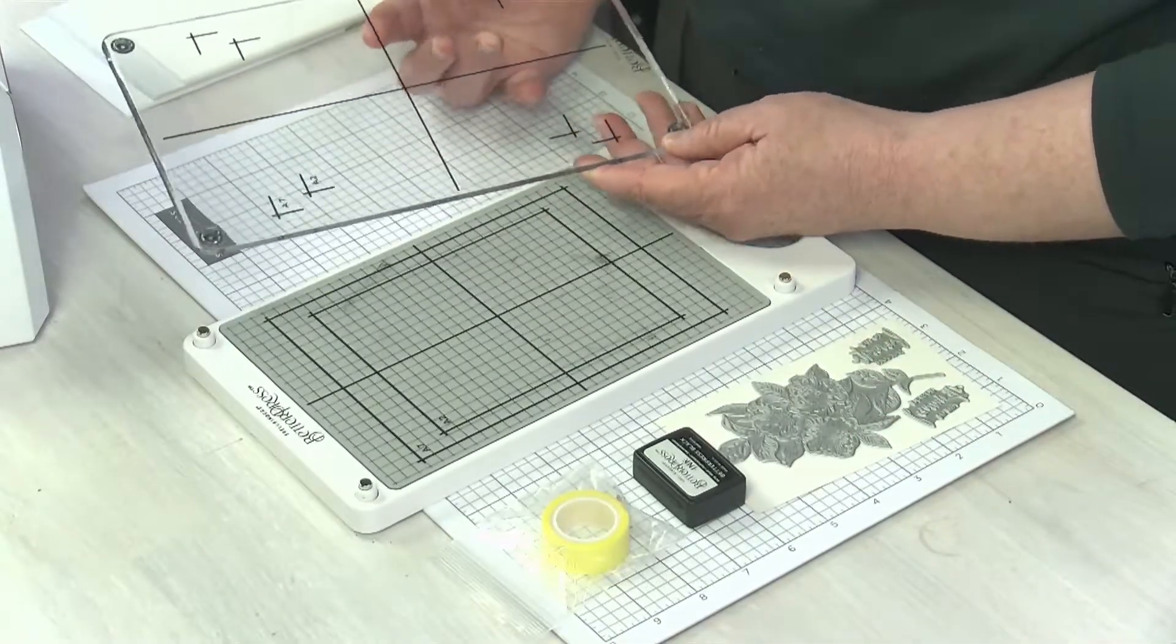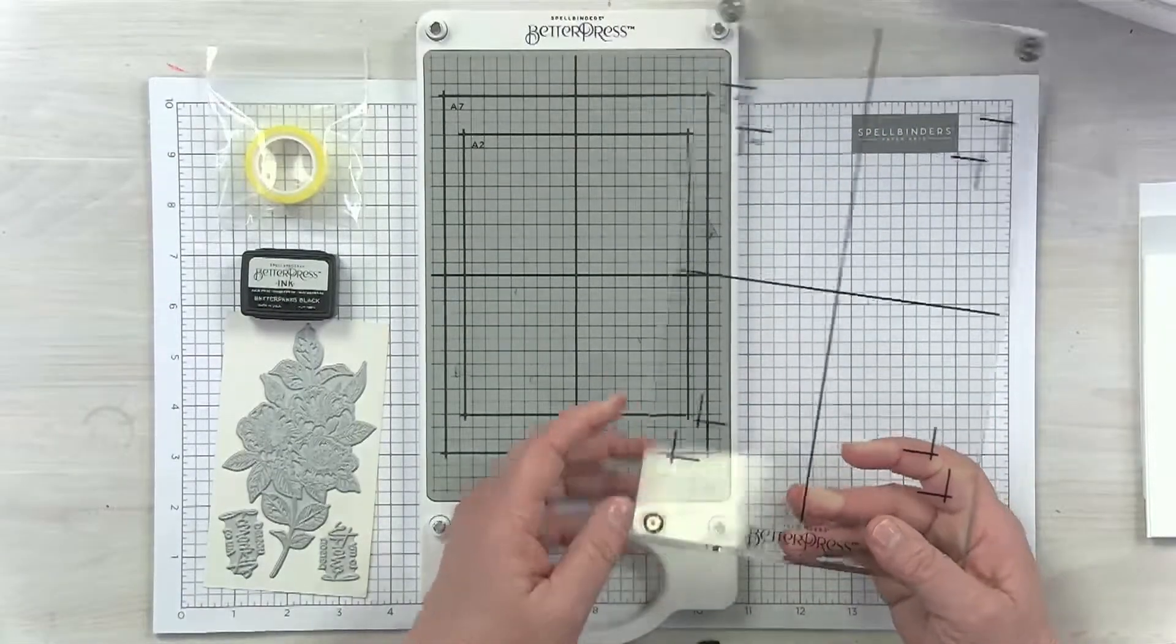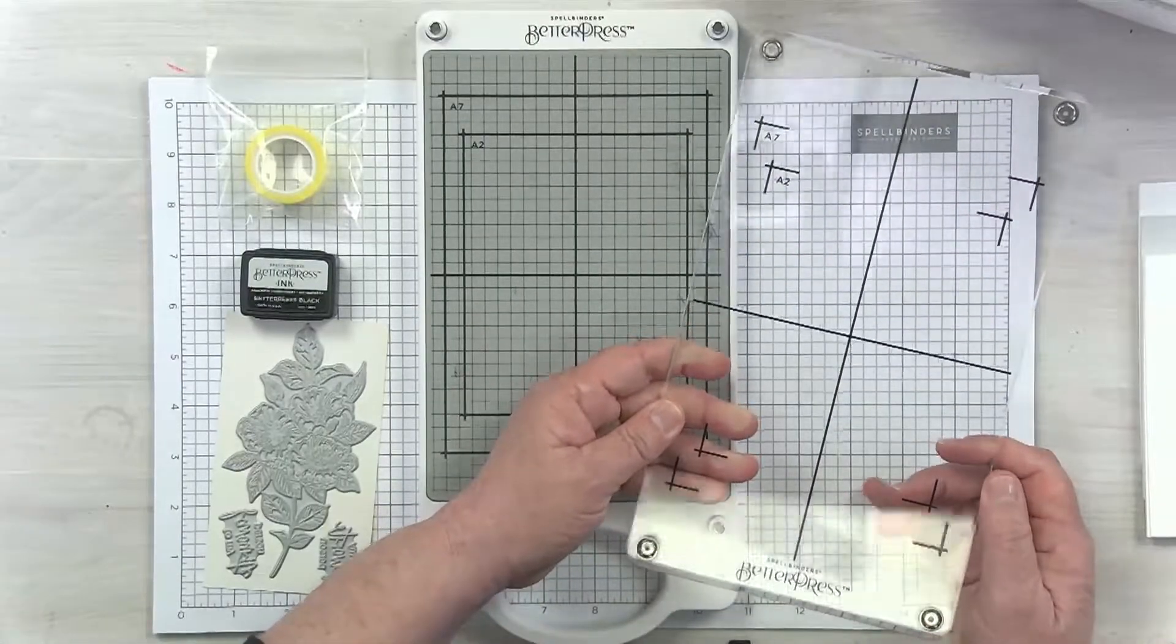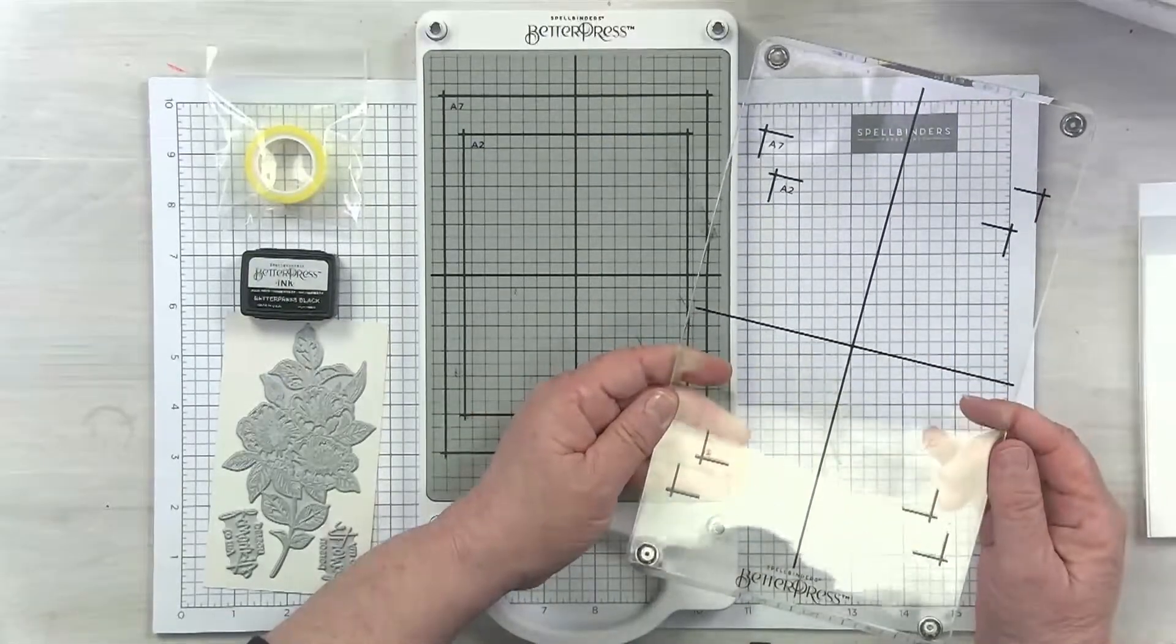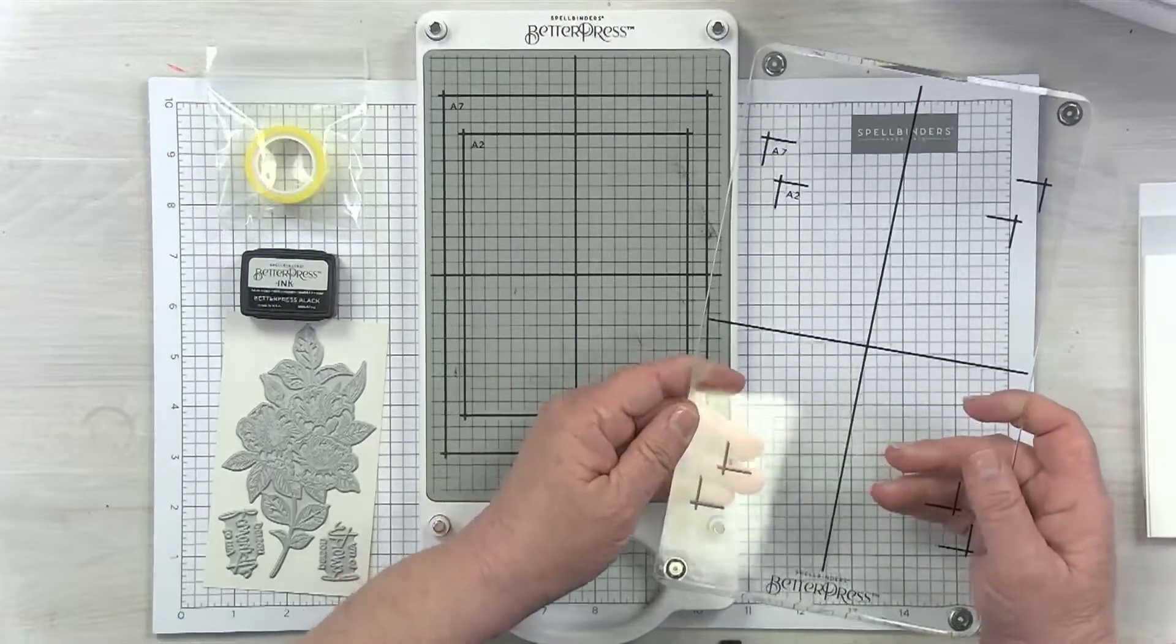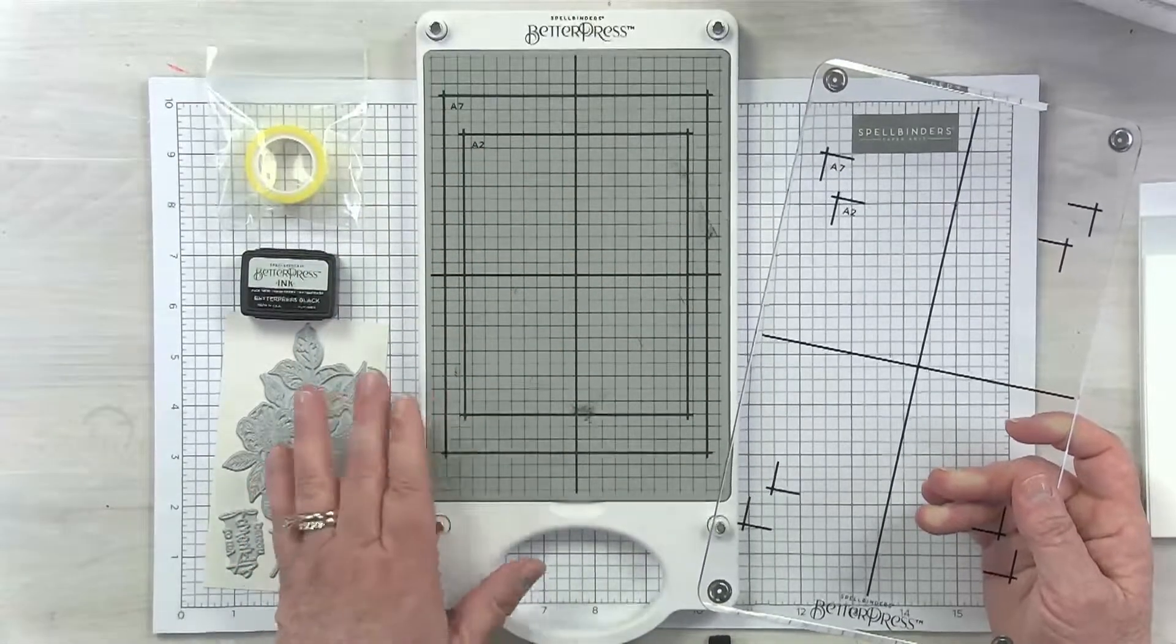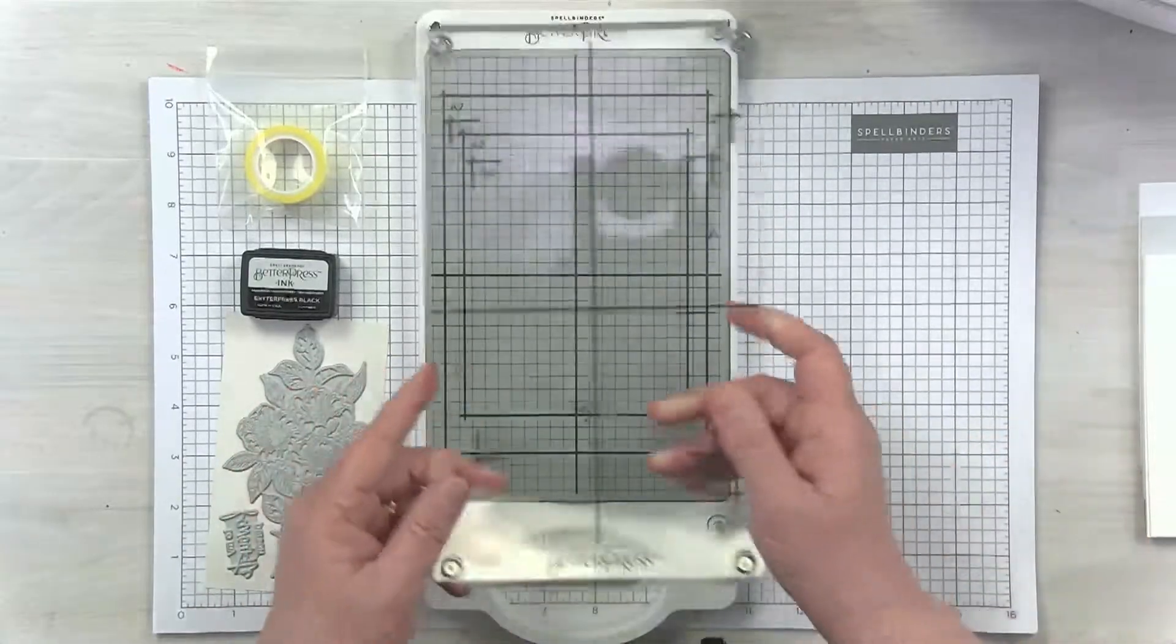The platen, this clear piece right here, has registration marks on it, which is awesome. When we put our card panel on, we have both the A2 size, a traditional American card, and the A7, which is a 5x7 card. We have registration marks for both on the platen and on the magnetic insert, as you can see here. Keep in mind that those work together to create a beautiful press print.